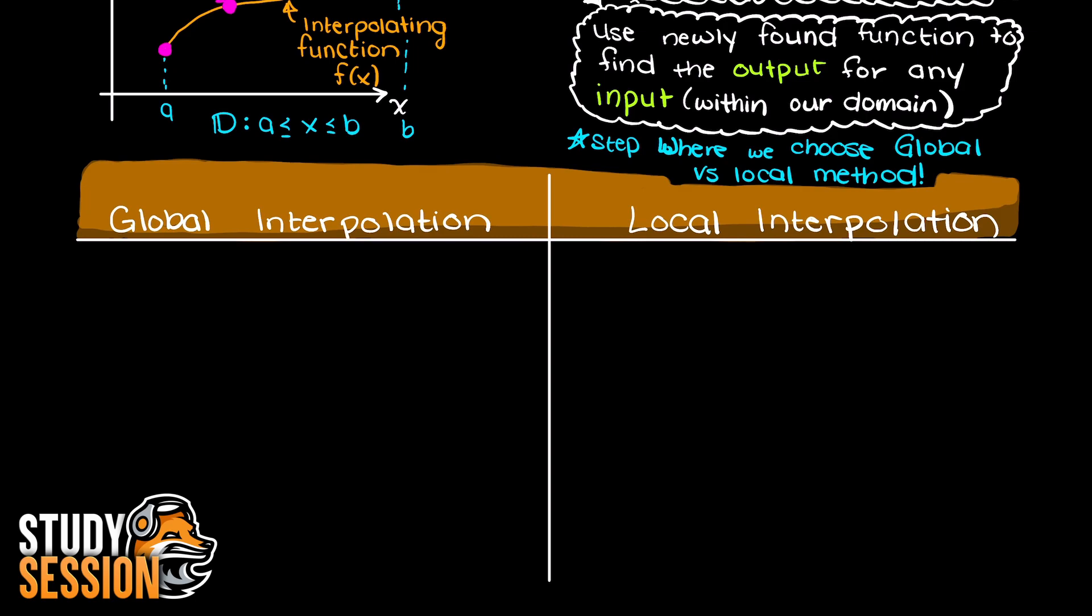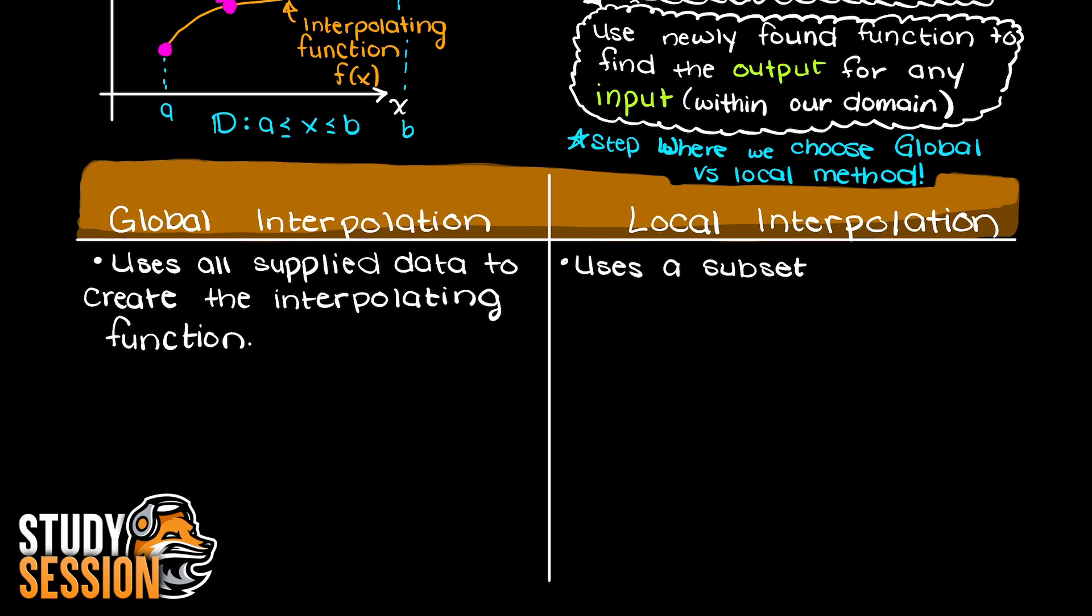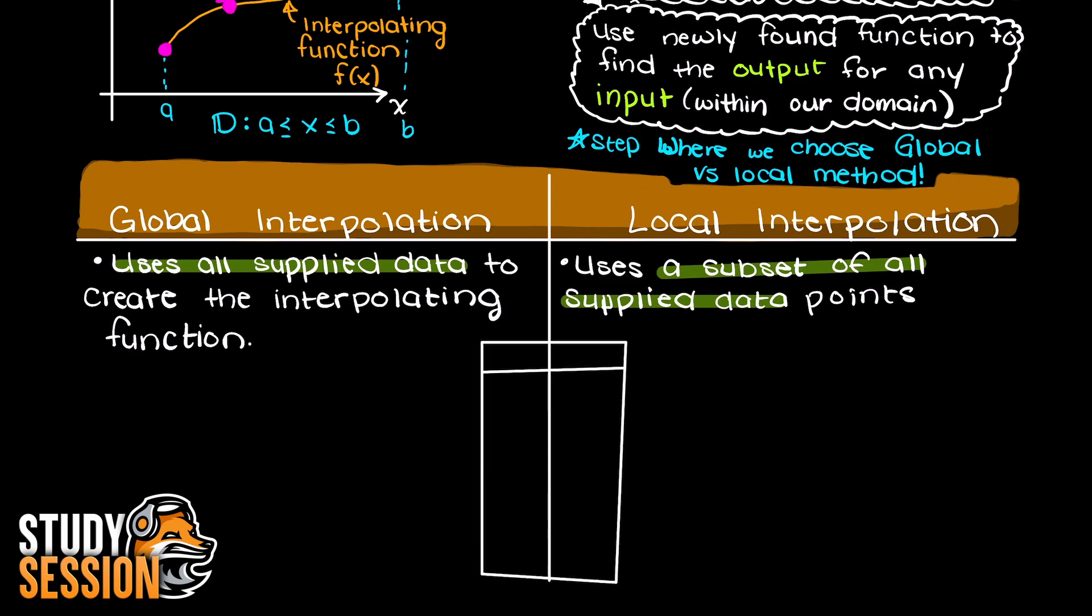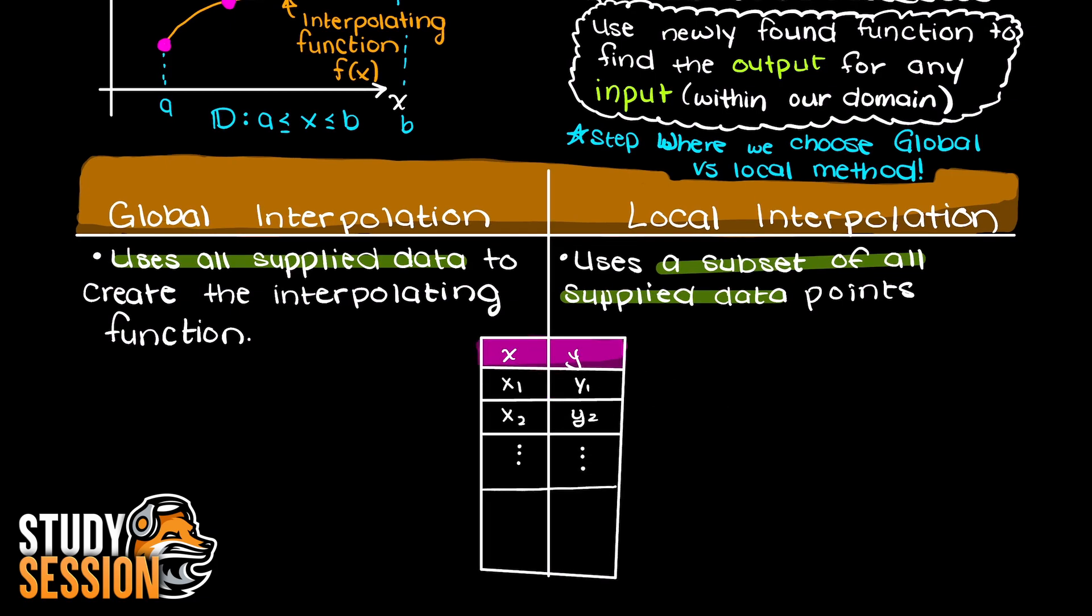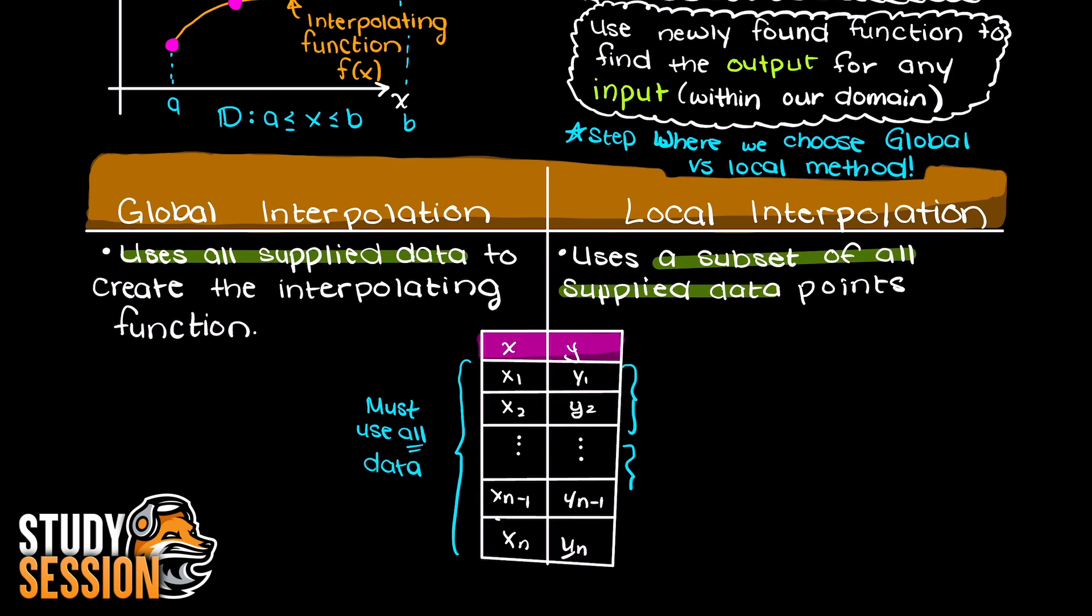A global interpolation method is going to use all possible data points to find its interpolating polynomial, whereas a local interpolation method is just going to use a subset of that total data. An example of a local interpolation method is spline interpolation, which will be talked about over the next couple of videos.